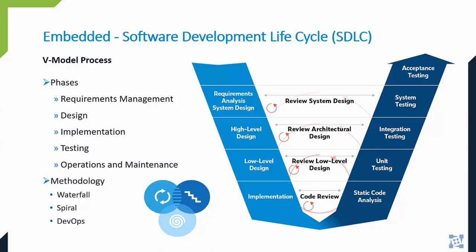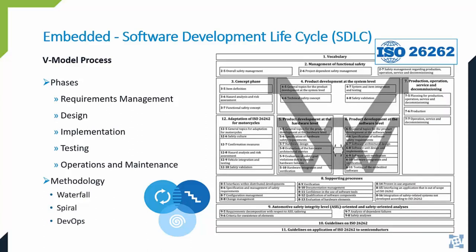Here is an example of the ISO 26262 V-model diagram used in the automotive industry to express the required software development phases to go through, which ensures that you are delivering a very safe and secure system.